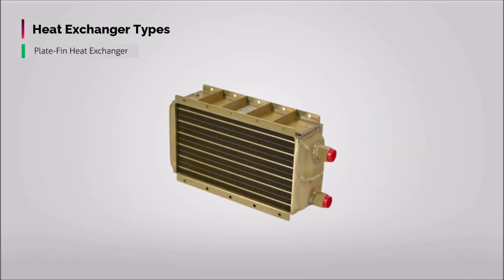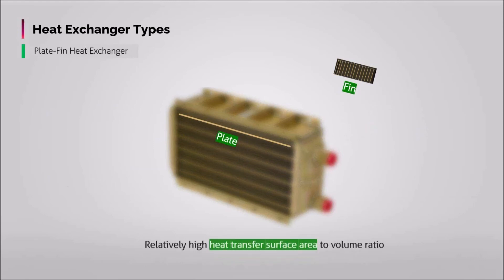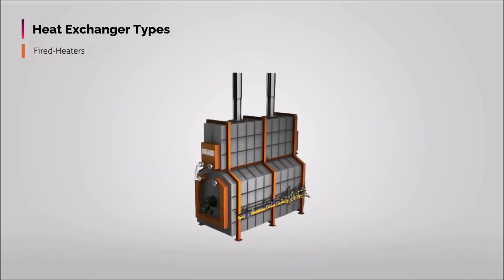Plate fin exchangers, used for heating and cooling, use plates and fins with a large surface area to transfer heat between fluids. They are often referred to as compact exchangers to emphasize their relatively high heat transfer surface area to volume ratio.